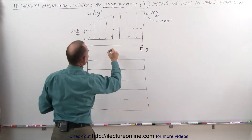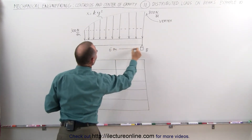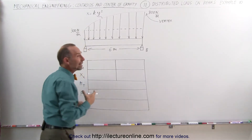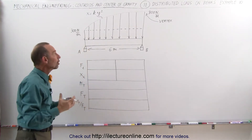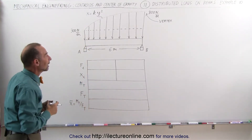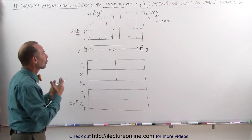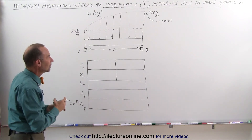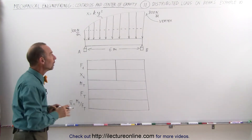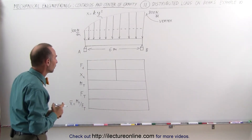The beam is six meters long. What we're trying to do here is find the moment caused by the total load distribution and see where the moment acts. We want to find the x-coordinate of the centroid of the total load, and we want to know the total force acting through that centroid.